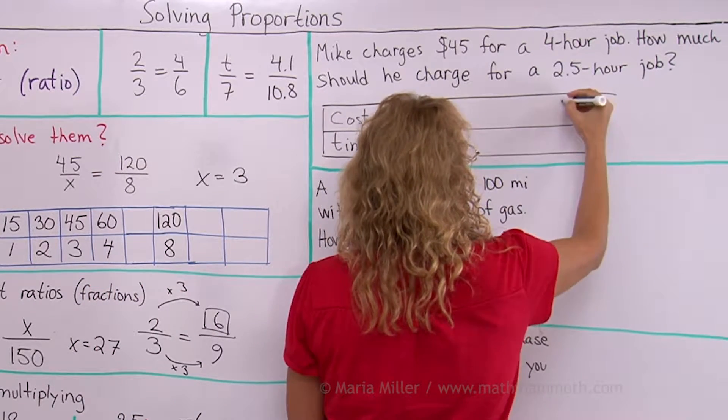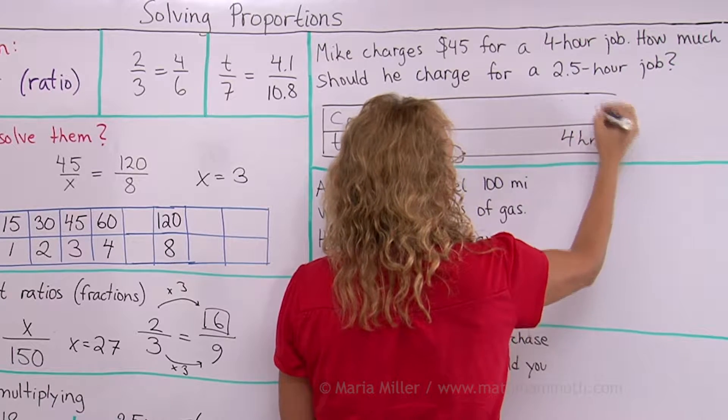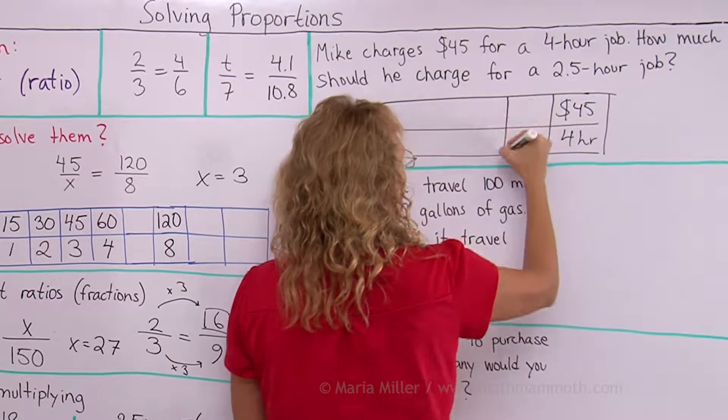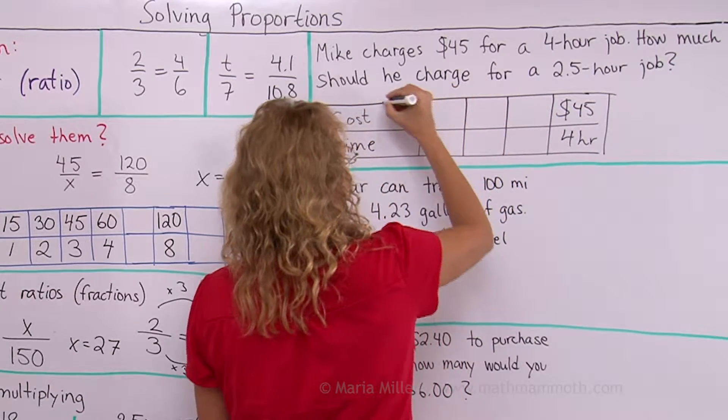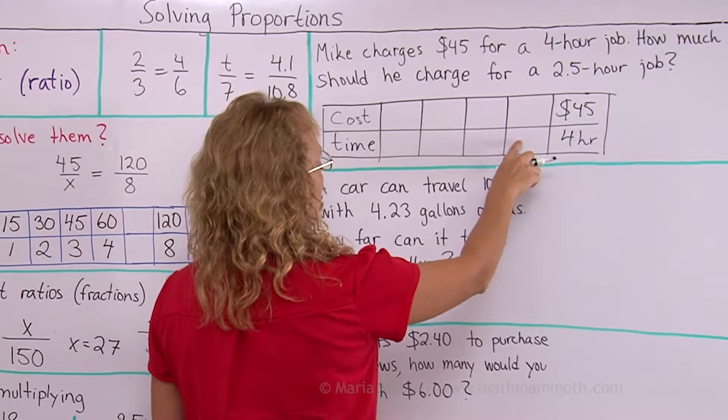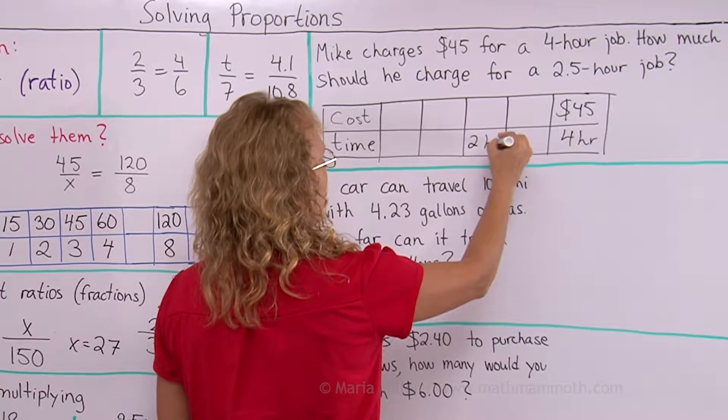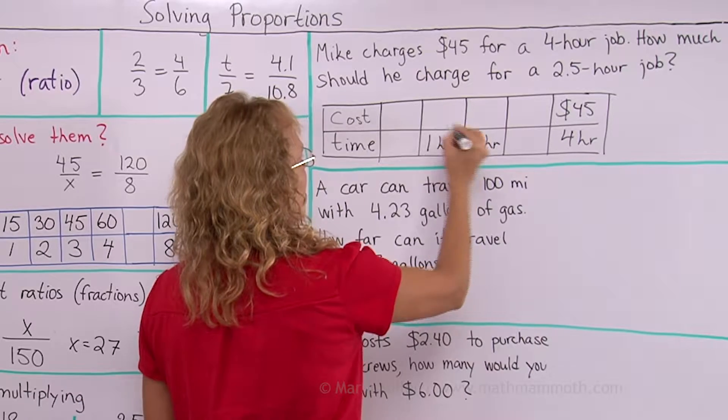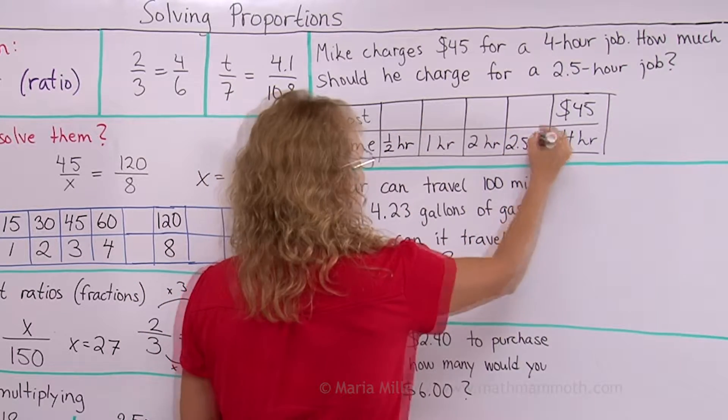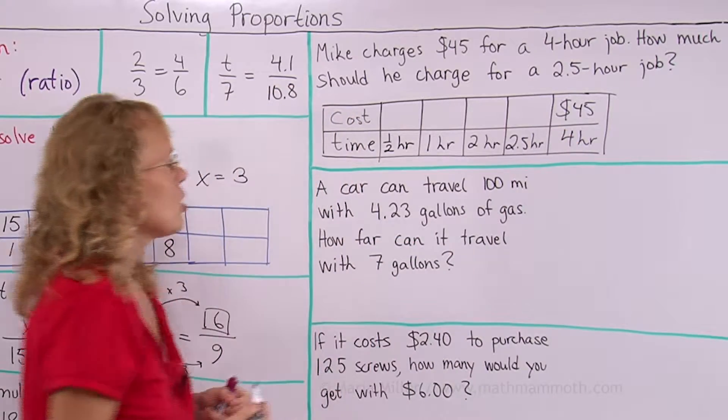And here's four hours and forty-five dollars. And now I can think about these different time periods. For example two hours. Let's put two hours here. One hour, half an hour and the two and a half hours that we need to know.